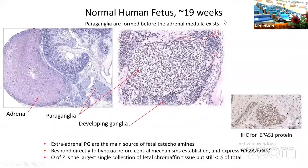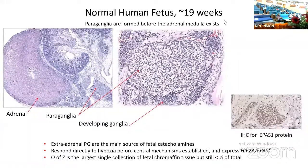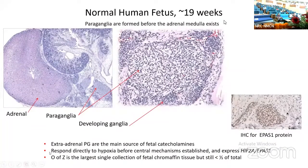This is a higher magnification view of a human fetus, shown to make several points. This is the adrenal medulla, and these are the extra-adrenal paraganglia. Note that extra-adrenal paraganglia are fully formed before the adrenal medulla exists. These pink cells here are provisional cortex or fetal cortex, which are just starting to be populated by adrenal medullary precursors. Extra-adrenal paraganglia are the main source of fetal catecholamines, and they respond directly to hypoxia to regulate fetal heart rate before central mechanisms of hypoxic signaling are established.